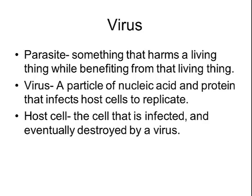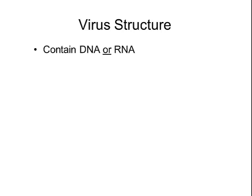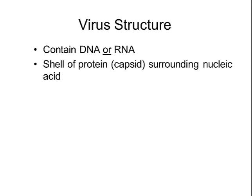Viruses basically attack certain host cells, go in and make copies of themselves, and once they've made enough copies, they destroy the cell. The general structure of a virus: all viruses have DNA or RNA on the inside — some kind of nucleic acid — but it could be DNA or it could be RNA. Around that DNA or RNA is a shell of protein called the capsid, which gives the outer structure of the virus, kind of like a cell wall.